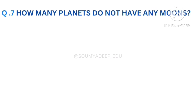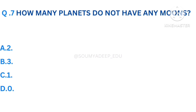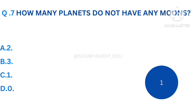How many planets do not have any moons? The options are 2, 3, 1, 0. Your time starts now. The answer is 2. Let's move to the next question.